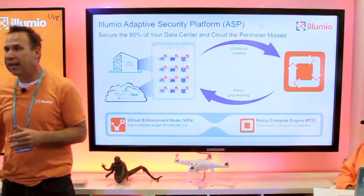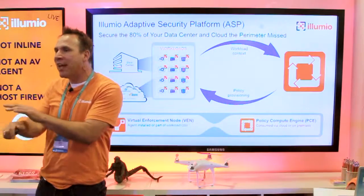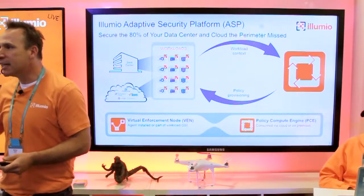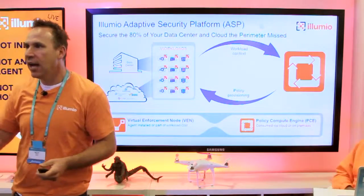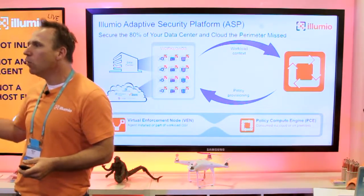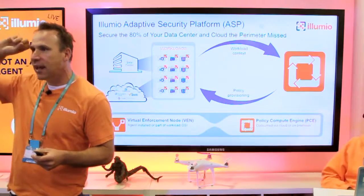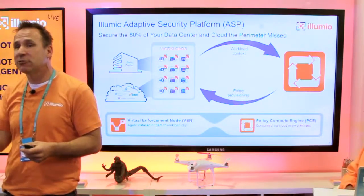And before I tell you more about what it is, I want to talk to you about all the things it isn't. The VEN is not in-line. It doesn't require any kernel mods. It is not a host firewall. You really got to think about it like it's an antenna. And the antennas have two things. Antennas send information and antennas receive information.